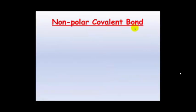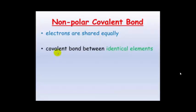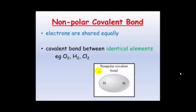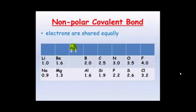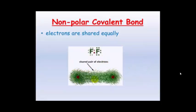Non-polar covalent bonds occur when electrons are shared equally between atoms — specifically when a covalent bond occurs between identical elements such as O₂, H₂, or Cl₂. Because they have equal electronegativity, the electrons are shared equally. For instance, two fluorine atoms both have an electronegativity of 4.0, so neither has a higher attraction and the electrons are shared evenly.